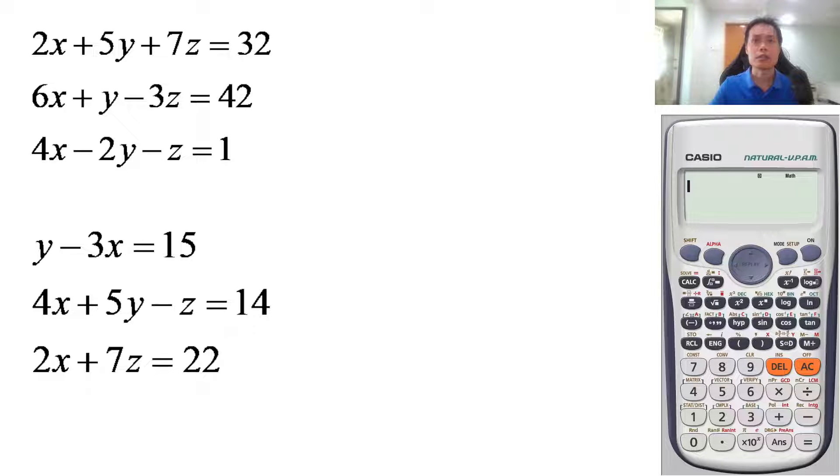As you can see here on your screen, we have 2x + 5y + 7z = 32, 6x + y - 3z = 42, 4x - 2y - z = 1. So to solve this three unknown equation, just go to your calculator here.